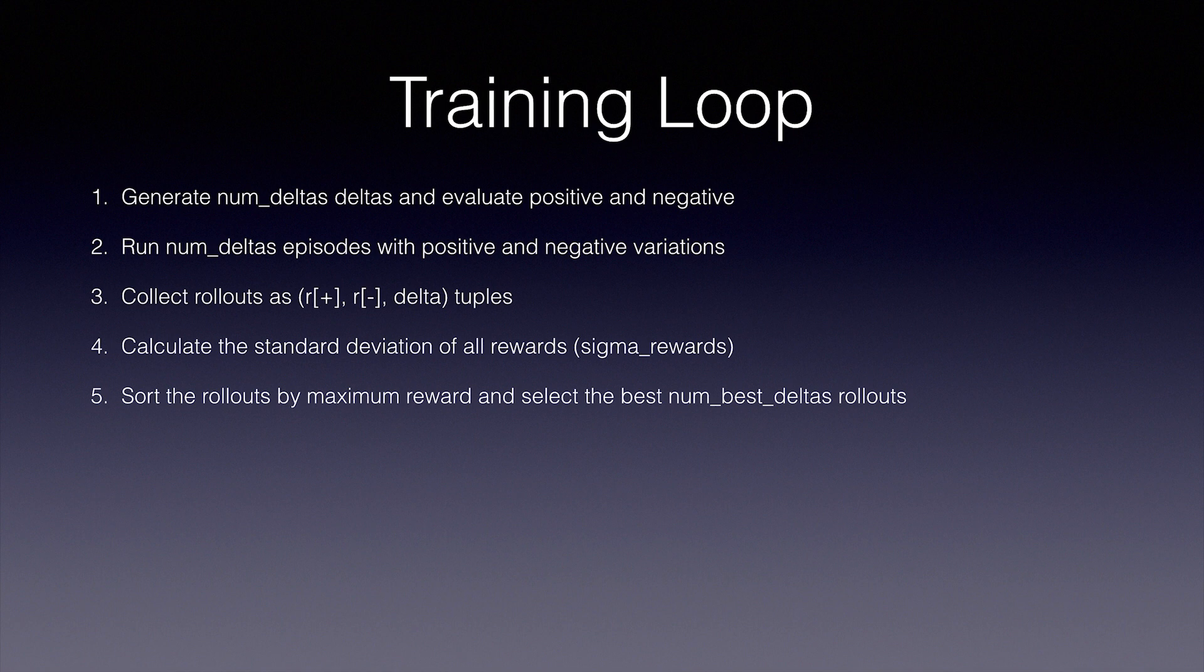Here's our final update formula. First, we're going to calculate a variable called step. So we simply loop over all the best rollouts and we calculate the reward positive minus reward negative times delta, and we add them all up. Then we have our step.